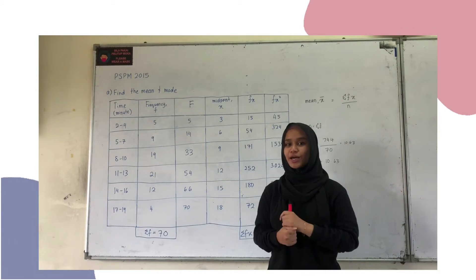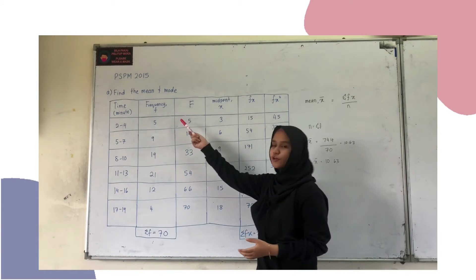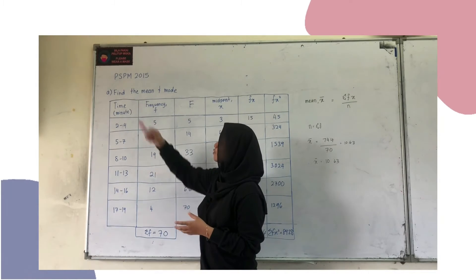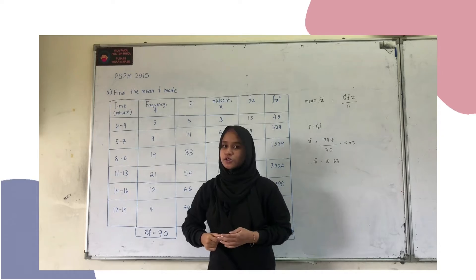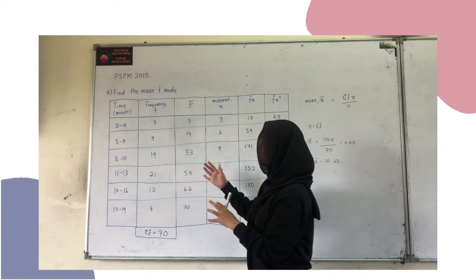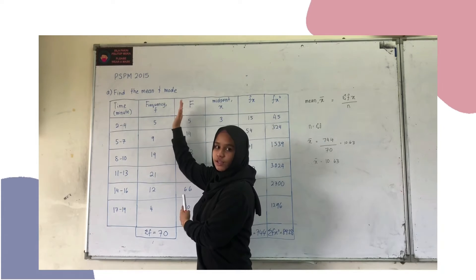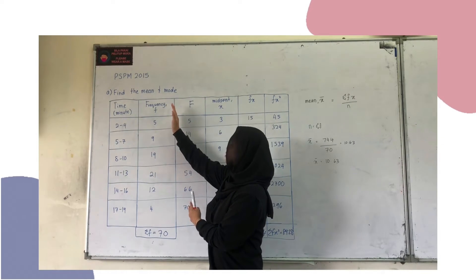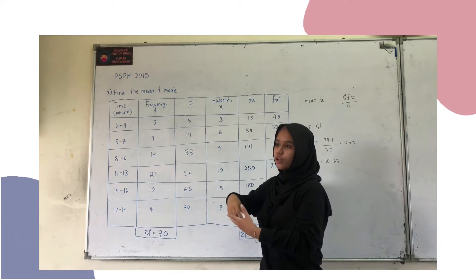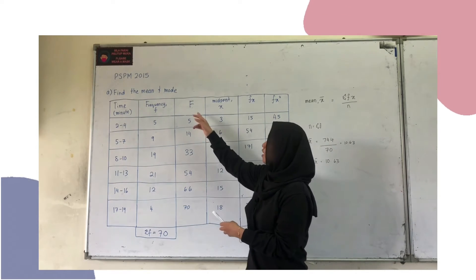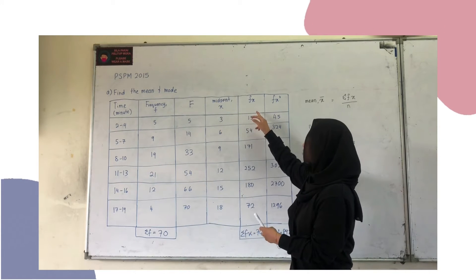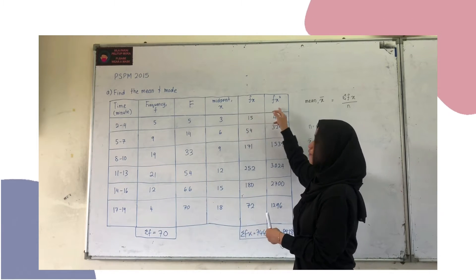Hi, I'm Rasha. I'm responsible to solve question A for GASBEN 2015, which is to find the minimum. The given data is only 22 days. We need to add more information to the table: cumulative frequency F, midpoint, fx, and fx squared.